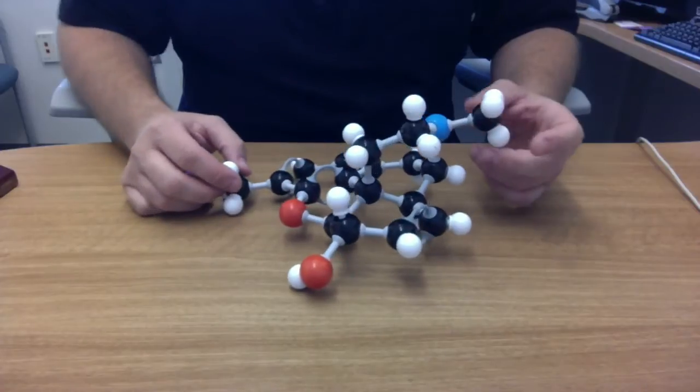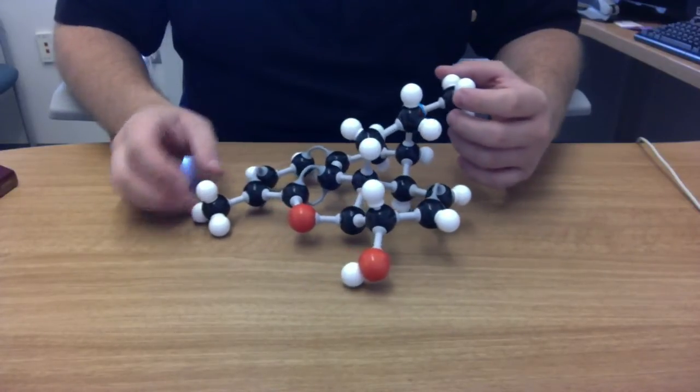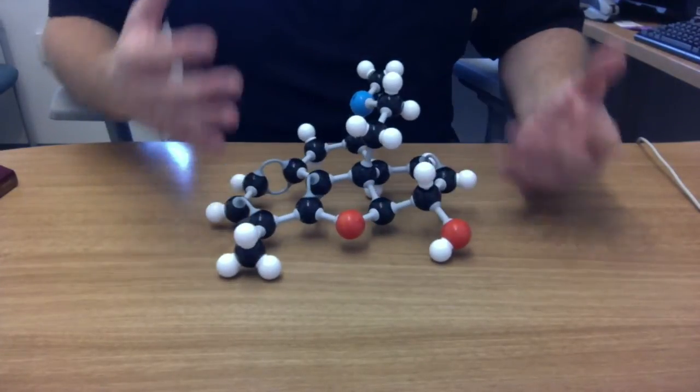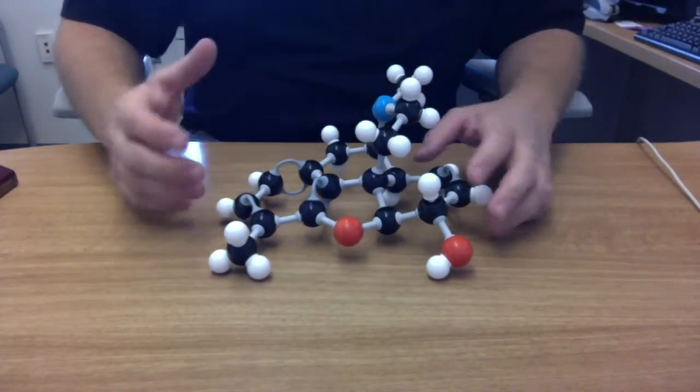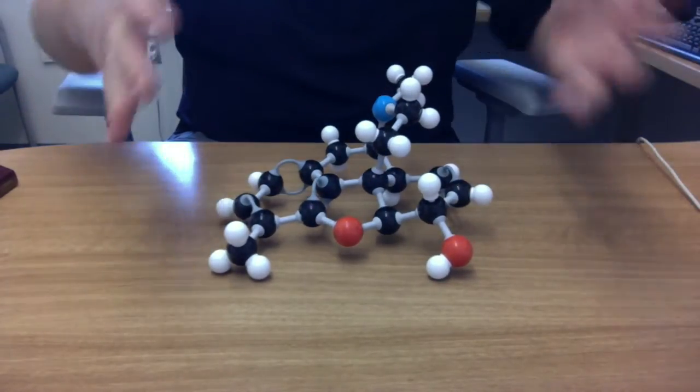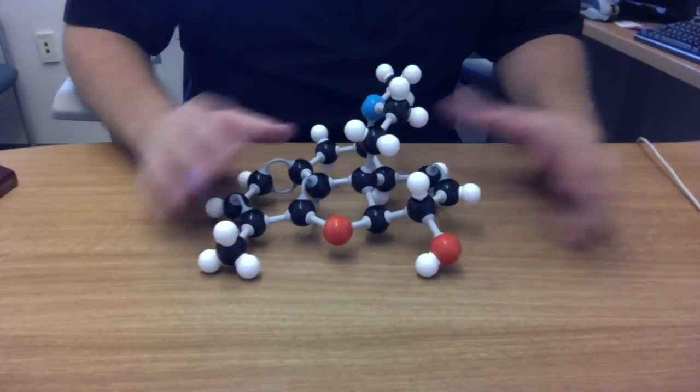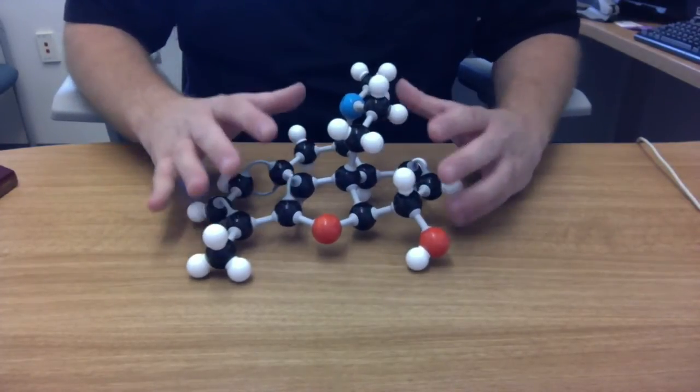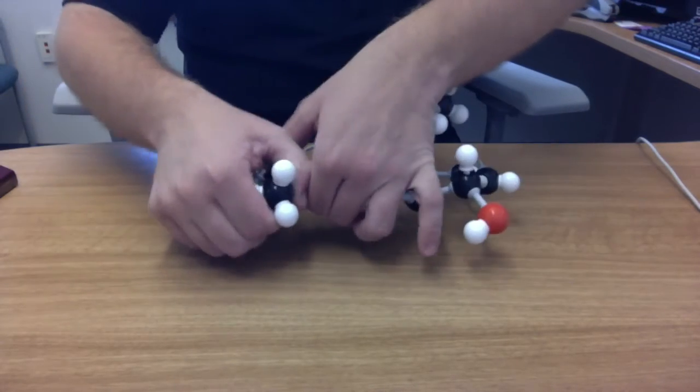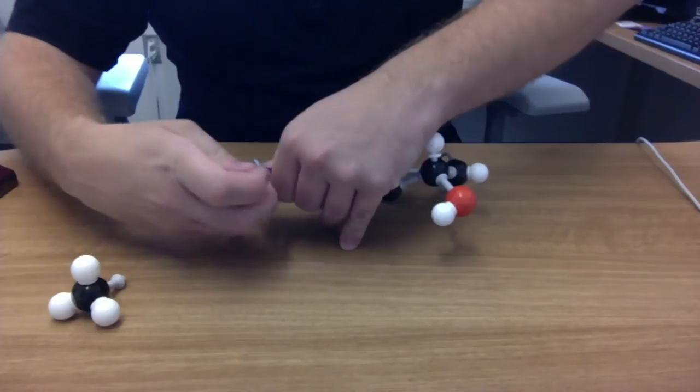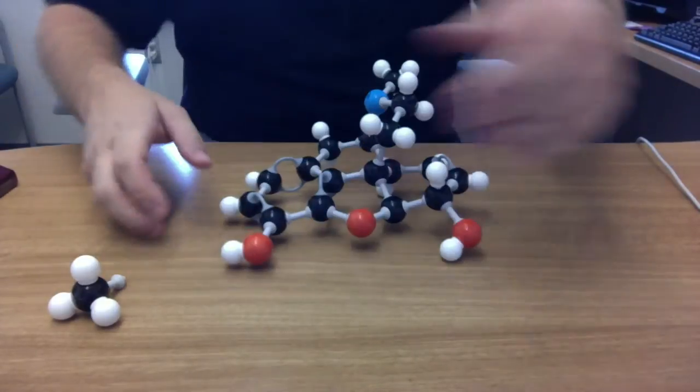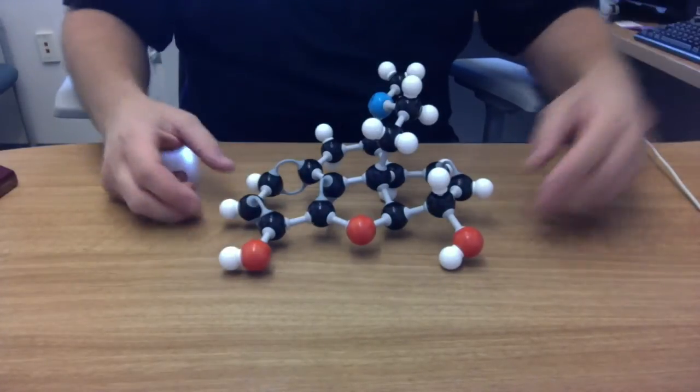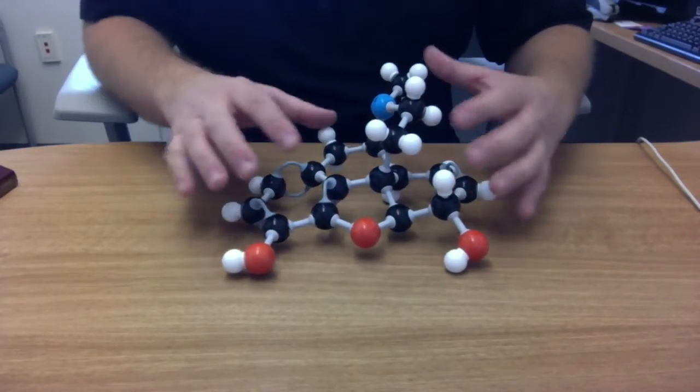The synthetic opioids are interesting because they can have very high specificity for certain opioid receptors. They may have very high specificity, for example for mu receptors, and they may not be associated with some of the things that medications like morphine are associated with. Morphine, we'll go back to morphine here. In addition to its interaction with the opioid receptors...